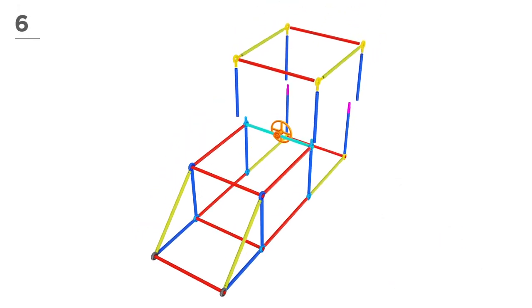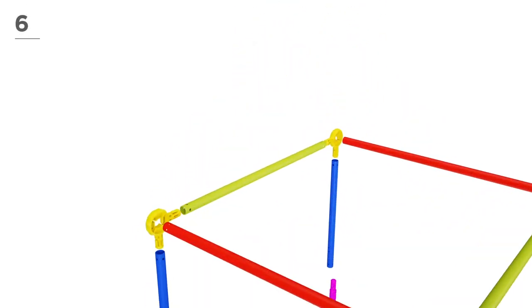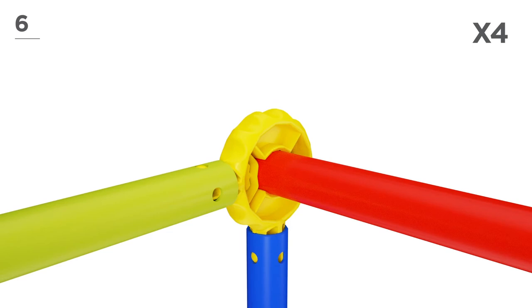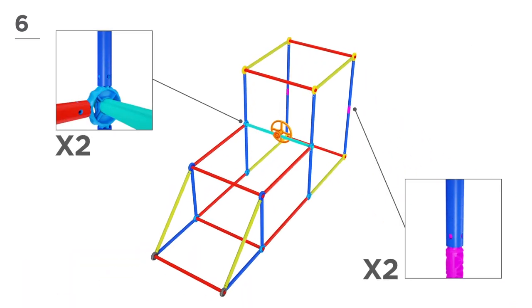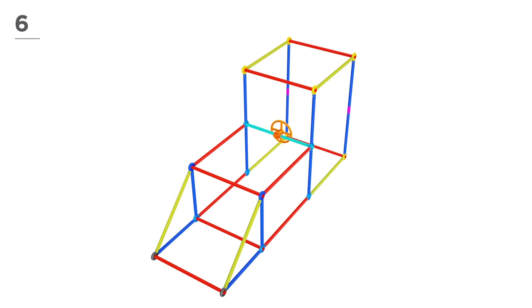For the top, use 4 navy poles, 2 red poles, 2 lime poles, and 4 yellow connectors. Then, snap-and-click all the parts together, like this.